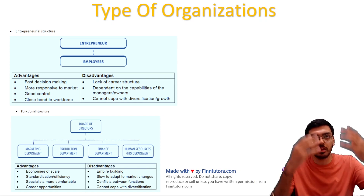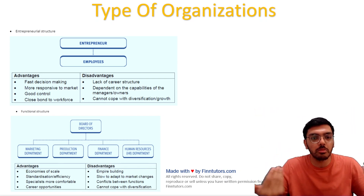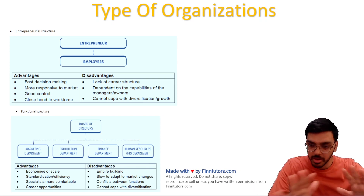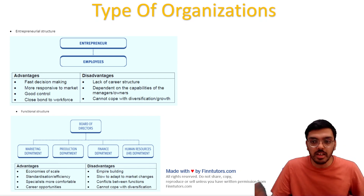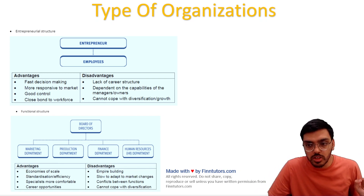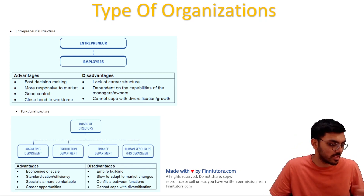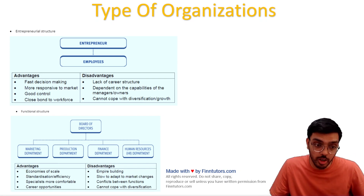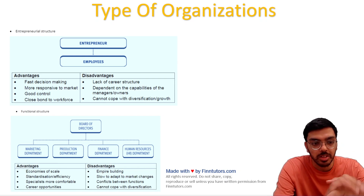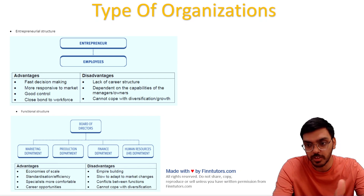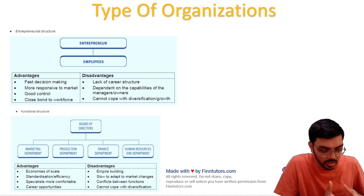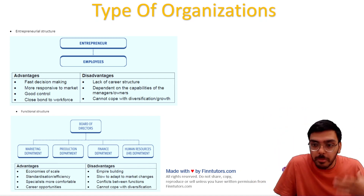We come to the second structure — the functional structure, which our company currently has. There's a board of directors at the top, and under each board member there are different departments: marketing, production, finance, and so on. Everything is clearly organized under departments. Advantages of the functional structure include economies of scale and standardization — for example, everyone in the marketing department becomes a specialist. There are also good career opportunities, as you can grow from a junior officer to a department head.